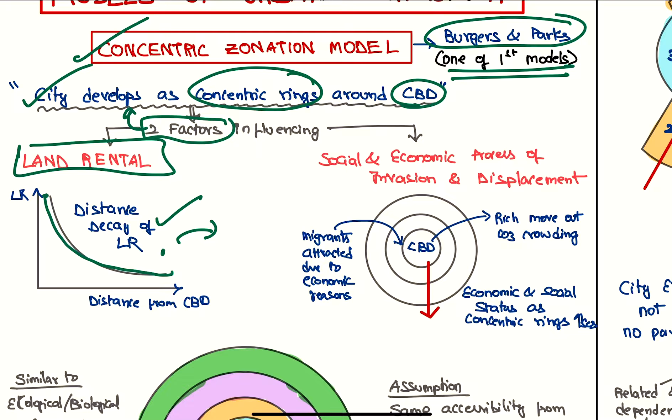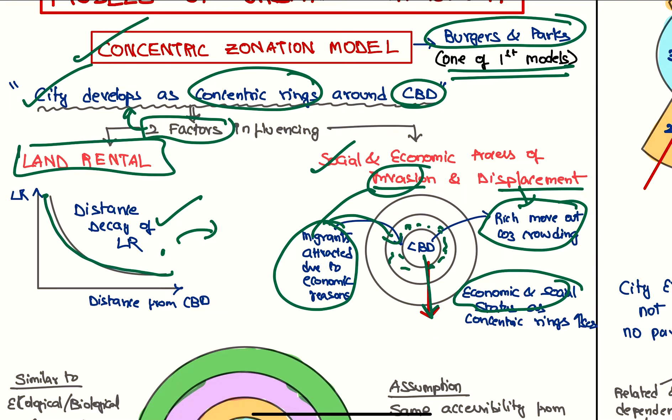And the social and economic process of invasion and displacement. The migrants are attracted towards the CBD because of economic reasons, so they start settling around here. Now the rich move away because of overcrowding, so this is the invasion and displacement - invasion by the migrants and displacement of the rich people. As we move away from the CBD, the social and economic status keeps on increasing.